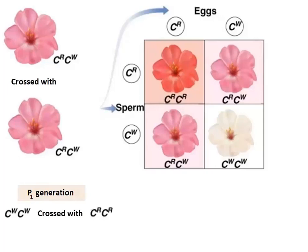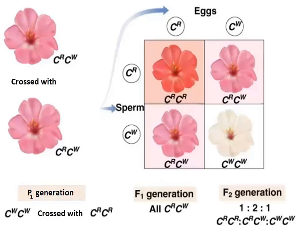So the P generation was crossed and it gave us the F1 generation, which were all pink. That F1 generation were crossed and we got our F2 generation. In that F2 generation, the ratio was one to two to one: for every one red, there were two pink and one white.